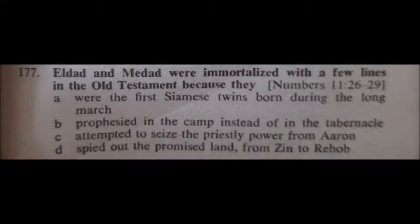A, I'm pretty sure is not correct — the first Siamese twins. B, prophesied in the camp — that sounds good, I remember there was a problem with that. And C, attempted to seize the priestly power from Aaron — I remember that being a problem also at some point, I'm just not sure when. D, spied out the promised land — I don't think it's that. I think I'm going to go with C for 177, although it could be B — I want to stick with C.